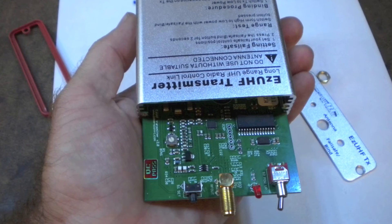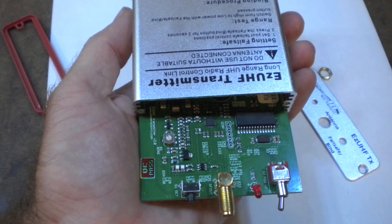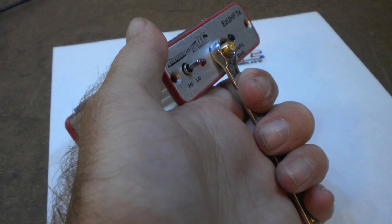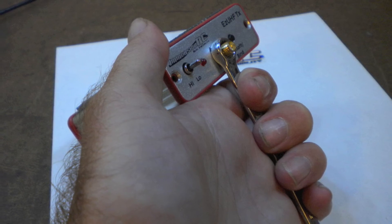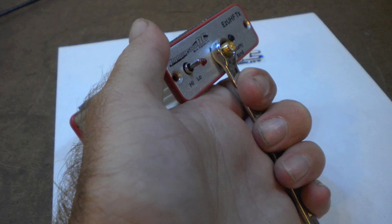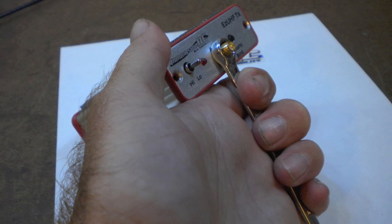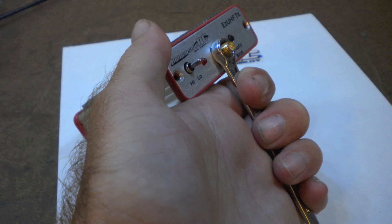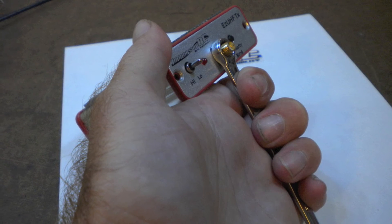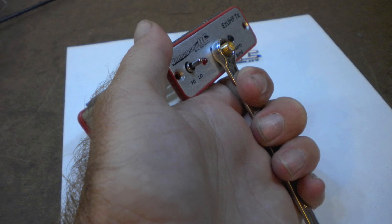When you're finished, you can put the unit back together. Most SMA connectors will need an 8mm or 5/16 inch wrench to tighten the locking nut. Be careful not to over tighten. A pair of pliers will probably work if you really don't have the right size wrench, but just be careful.